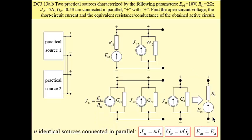In general, when we have N identical sources connected in parallel, the short-circuit current of the combination is N times greater than the short-circuit current of the single source. Obviously, the total resistance is N times smaller than the resistance of the single source, and the open-circuit voltage is exactly the same as the open-circuit voltage of a single source.